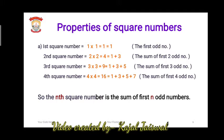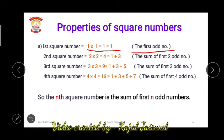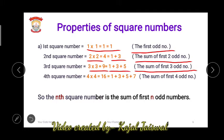The first property or pattern you will notice: the first square number — 1 into 1 equals 1, which is the first odd number also. Second, 2 into 2 gives 4, and 4 is also equal to the sum of the first 2 odd numbers, that is 1 and 3. The third square number is 9, obtained by 3 into 3, and 9 is also the sum of the first 3 odd numbers, that is 1 plus 3 plus 5. So this pattern will go on repeating itself.